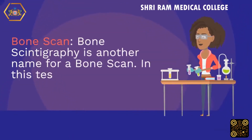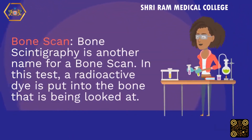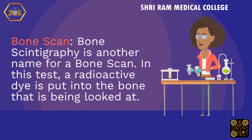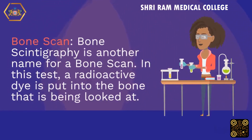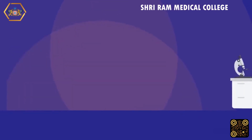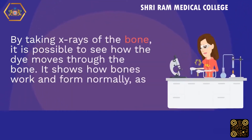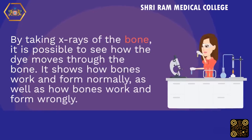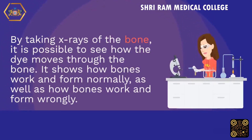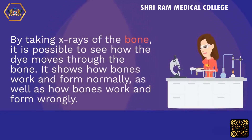Bone scan: bone scintigraphy is another name for a bone scan. In this test, a radioactive dye is put into the bone that is being looked at. By taking X-rays of the bone, it is possible to see how the dye moves through the bone. It shows how bones work and form normally, as well as how bones work and form abnormally.